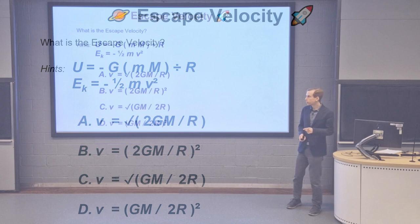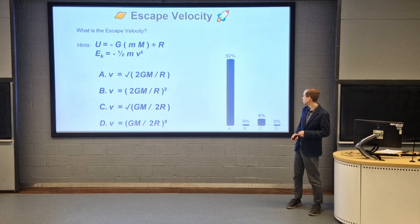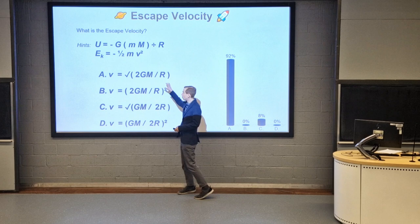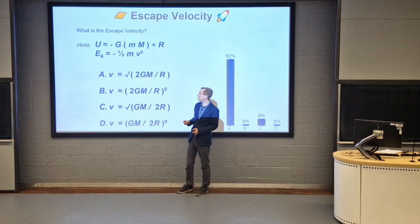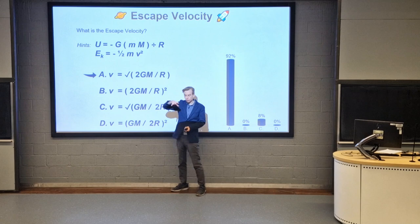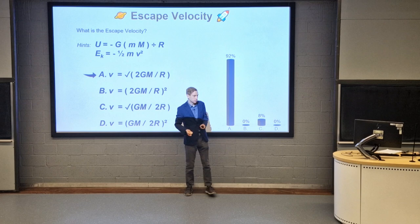Let's take a look at the responses - looks like most people going for option A. That's exactly right. When we set these two equal to each other and solve for v, what we get is option A - our escape velocity, how fast we need to go to give something enough kinetic energy to escape the gravitational pull of a planet and never come back. We can see it depends on the mass of the object and the radius from the centre.